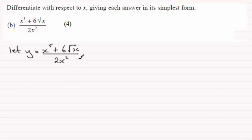Now to differentiate this we need to break this up into two terms, and when you've got a division like this one way is to just divide each of the terms on the top by the single term on the bottom. So we've got x to the power 5 then divided by 2x squared, and then we've got plus 6, and when it comes to root x I'm going to change that to x to the power half.